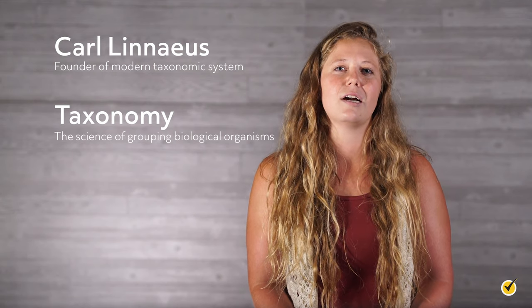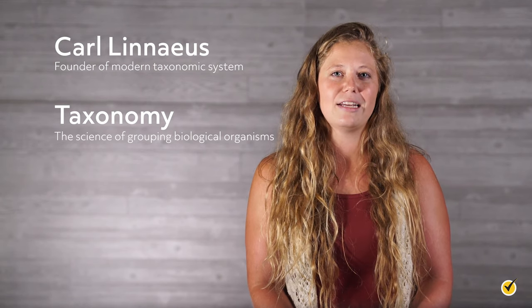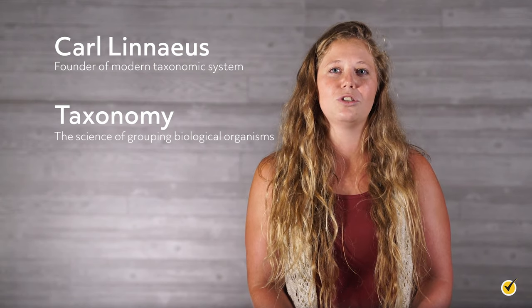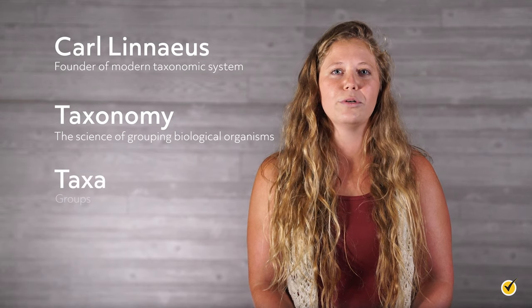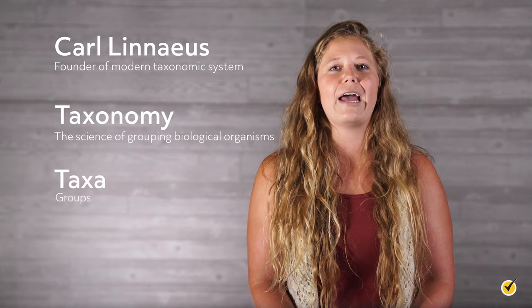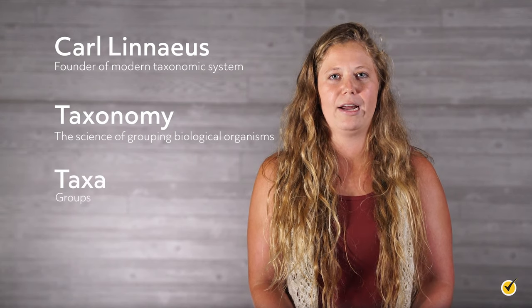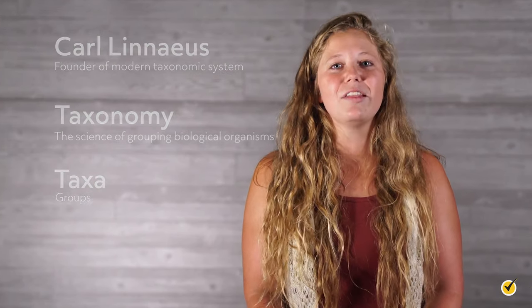Linnaeus used his observations about plants and animals to sort them into taxa, or groups, so that everything was simplified and organized. Even though Linnaeus' system was morphology-based and came before we understood genetics, the framework is still in use. Furthermore, the system is always being updated as scientists learn more about genetics and discover new species.